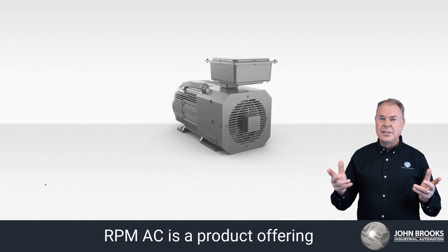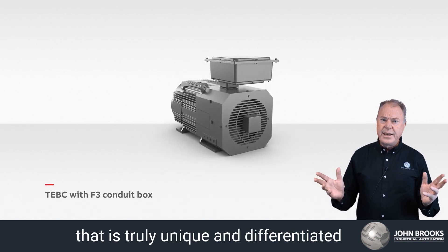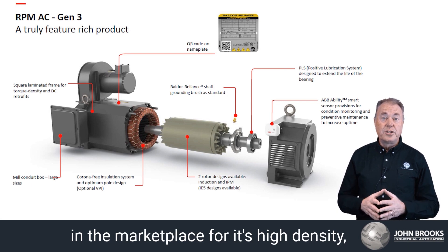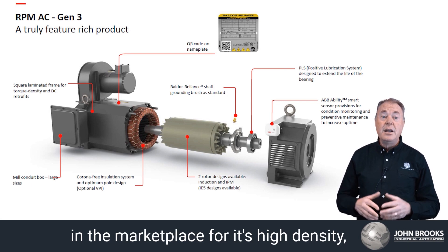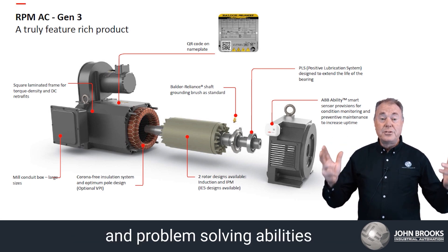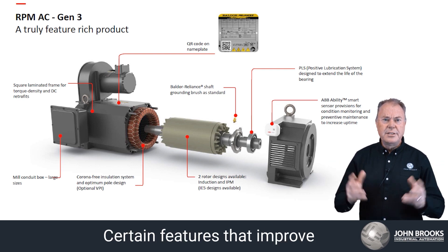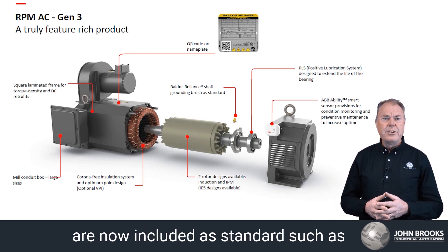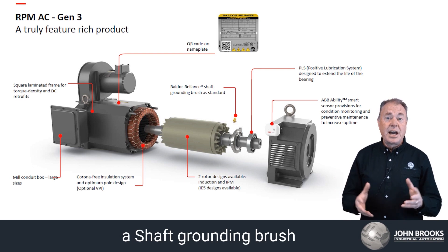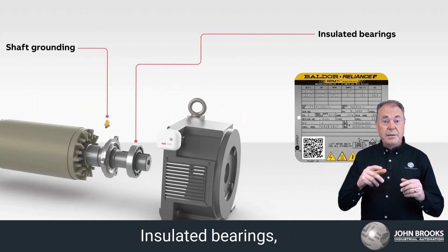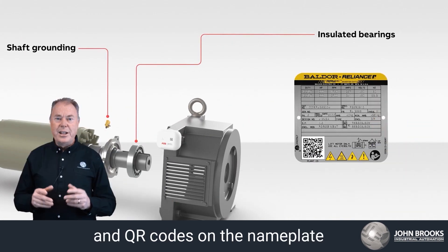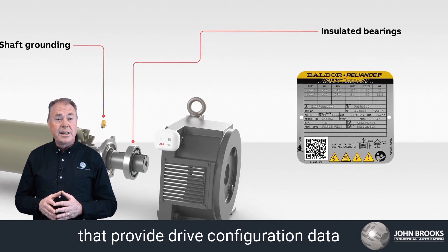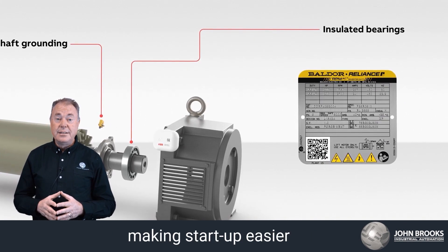RPM AC is a product offering that is truly unique and differentiated in the marketplace for its high density, high performance, and problem solving abilities. Certain features that improve variable speed performance are now included as standard, such as a shaft grounding brush, insulated bearings, and QR codes on the nameplate that provide drive configuration data, making startup easier.